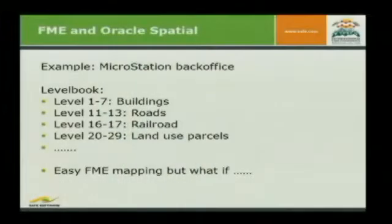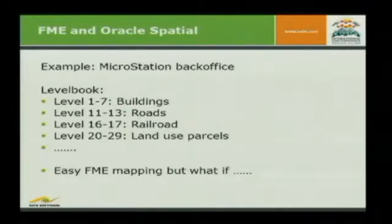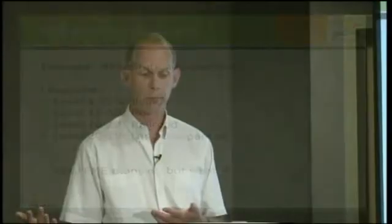Looking closer at the DGN file: we've got a customer and that customer has something they call a level book — a level book says on which level which kind of data do I have. On the first seven levels they've got buildings, next they've got roads, etc. This makes for really easy mapping into an Oracle database: it's just saying IGDS level 1 through 7 goes into buildings, etc.